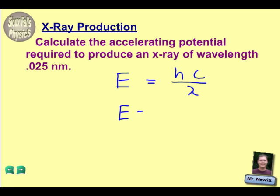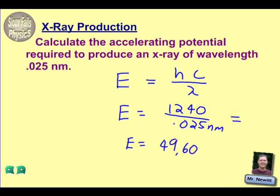So, plugging in what we know here, we know that h times c together, that's given to us on our constant sheet as 1240, and the wavelength they tell us of the x-ray is .025 nanometers. Now, keep in mind that 1240 is already calibrated for us to keep our wavelength in nanometers. So once we work that out for our energy, we get an energy value equal to 49,600 electron volts.